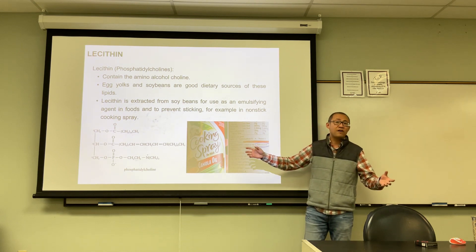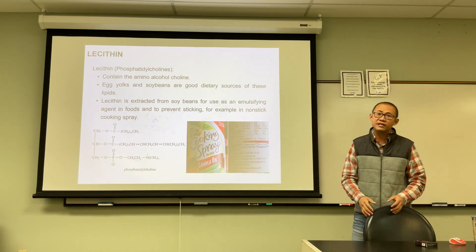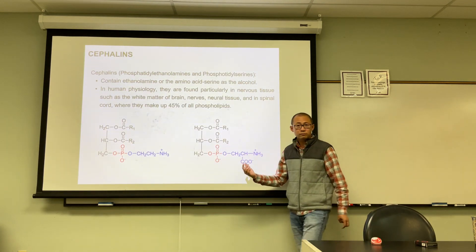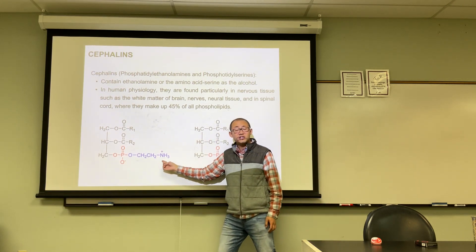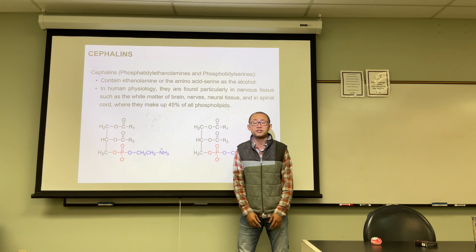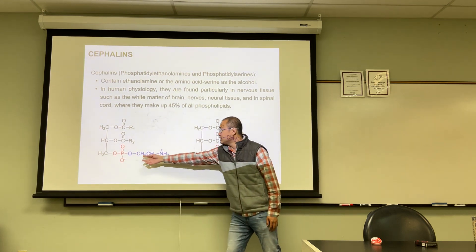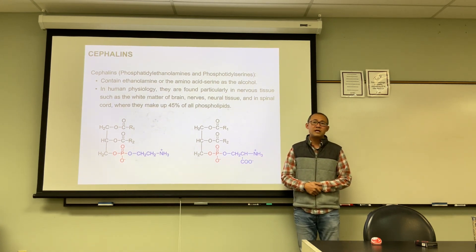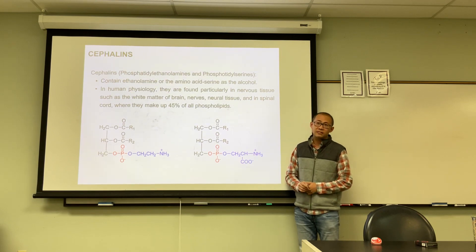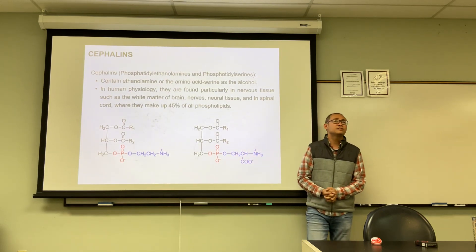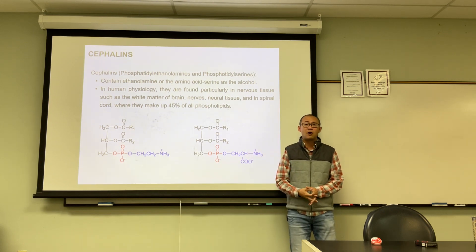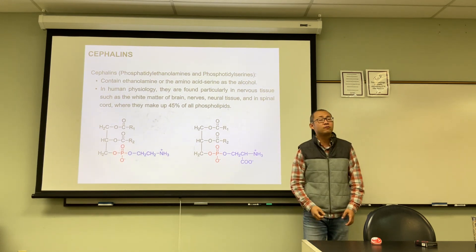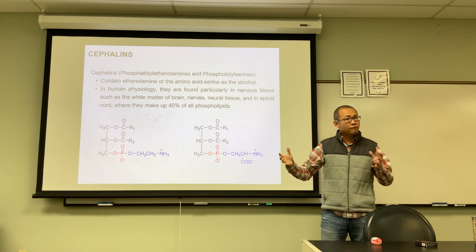Lecithins are mainly found in egg yolks and soybeans — soybeans being the main source for extracting lecithins, which can be used as an emulsifier and cooking spray for non-stick purposes. When the small alcohol is ethanolamine or serine, the phosphoglyceride is called cephalin or phosphatidylethanolamine or phosphatidylserine.